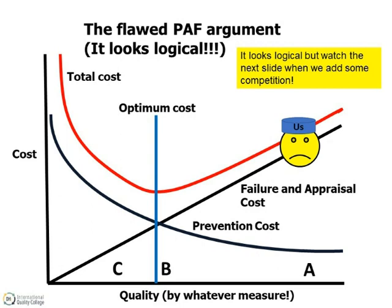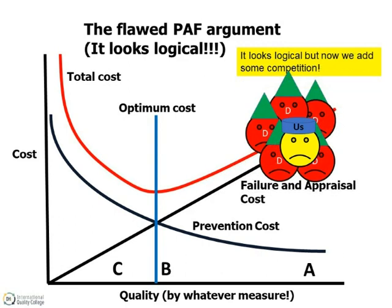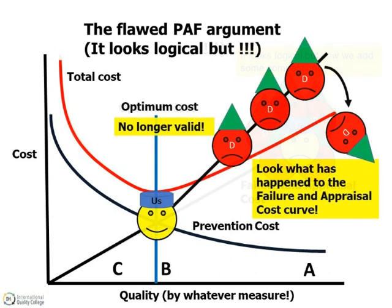The flaw in the argument results from ignoring the fact that the organisation has probably got competitors. At point A, the probability is that all of them are tightly bunched at the same place as shown on the graph. The reason being that if any one of the competitors were much better than the others, then at least the worst one would be pushed out of the market. The customer would naturally prefer the better products. This is what happened in the automotive industry in the 1970s.